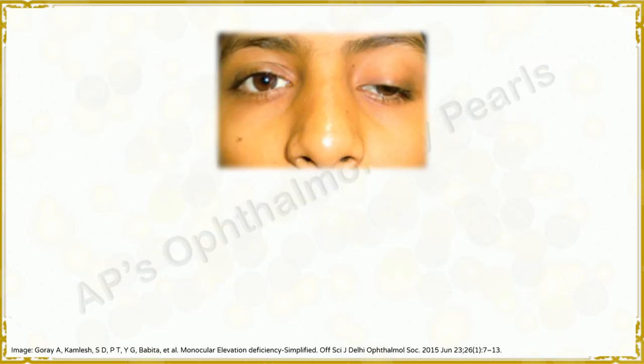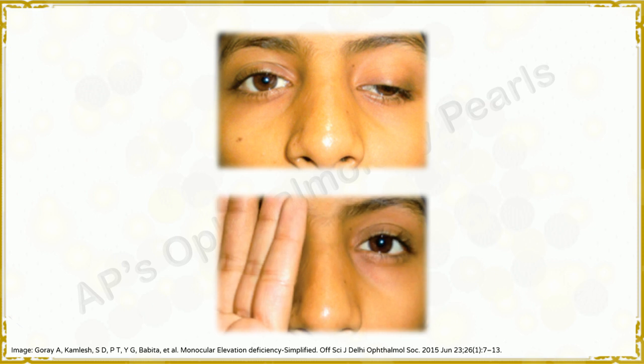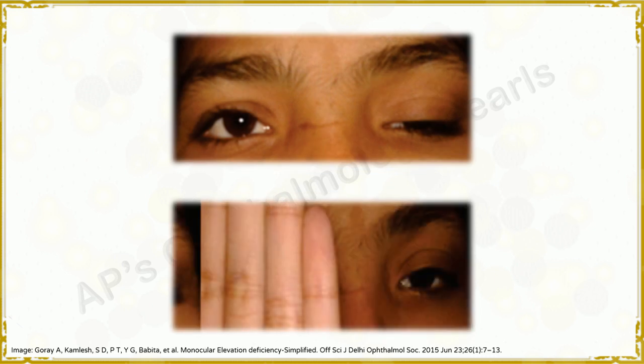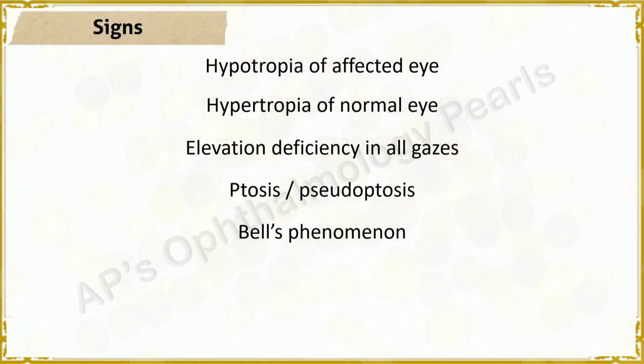Ptosis or pseudoptosis: whenever there is a hypotropia, there is a drooping of the upper eyelid due to facial attachments between the levator and superior rectus muscle. This is a pseudoptosis, and the way to differentiate it from true ptosis is to occlude the normal eye so the affected eye takes up fixation — the drooping disappears. On occlusion of the normal eye, there is an elevation but not fully; this remaining component is true ptosis. True ptosis may be present in about a quarter of cases, and Marcus-Gunn jaw-winking ptosis has also been reported in patients with monocular elevation deficiency.